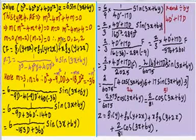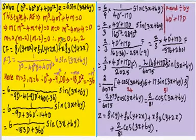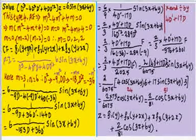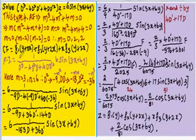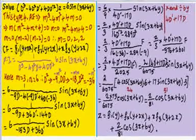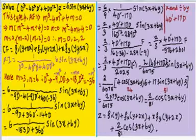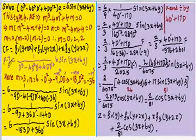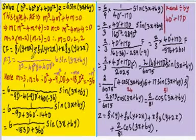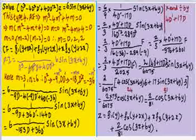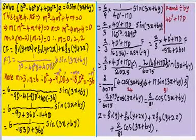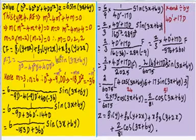The complementary function is f₁(y + 0x) plus f₂(y + 2x) plus x·f₃(y + 2x). Now we find the particular integral: PI = [1 / (D³ minus 4D²D' plus 4DD'²)] · 6·sin(3x + 6y).